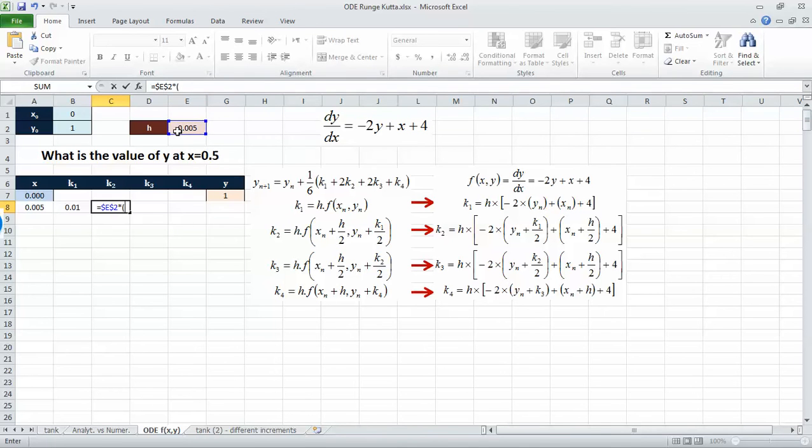And the next one it's going to be the same thing, the step multiplied by negative 2 multiplied by y plus k1 over 2, plus x plus h over 2, plus 4. And we do this for the step because step will not change, it's going to be the same for all the steps, but this k will be calculated from the k that depends on the previous one for each step, so we don't need to freeze it.